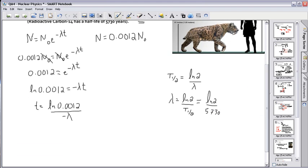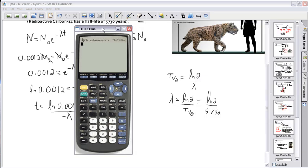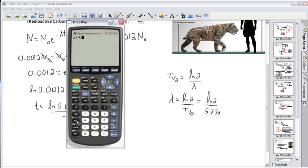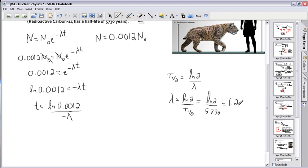So I'm just going to need my trusty calculator to figure this out, and I'll bring it over here. So I want the ln 2, take that, divide it by 5,730, and I end up with 1.2 times 10 to the minus 4.